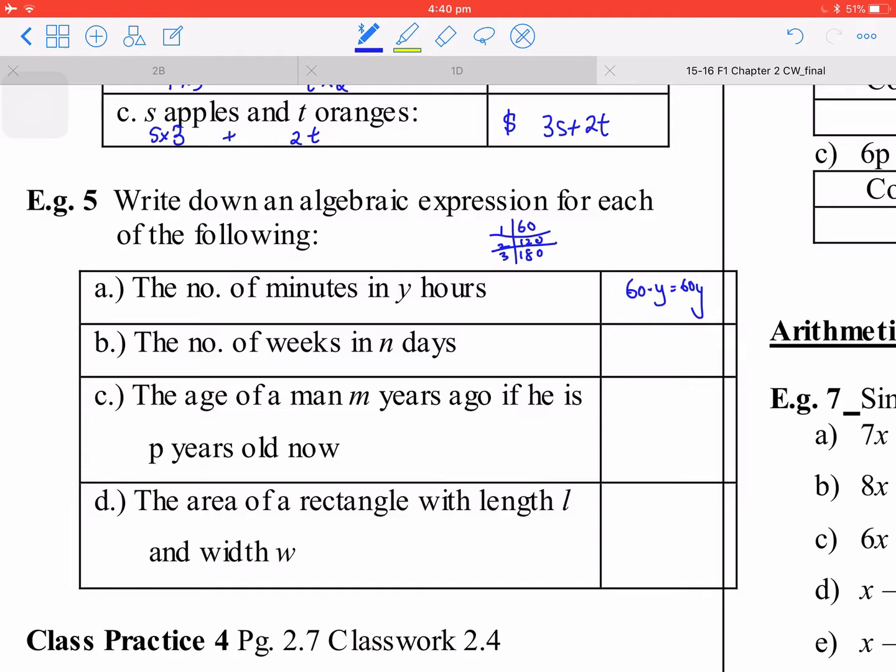The number of weeks in n days. When you have 7 days, you have 1 week. If there are n days, that means you are going to use n divided by 7, that should be n over 7 weeks.